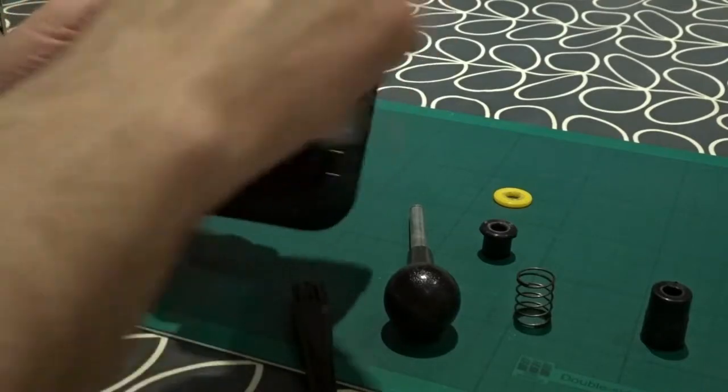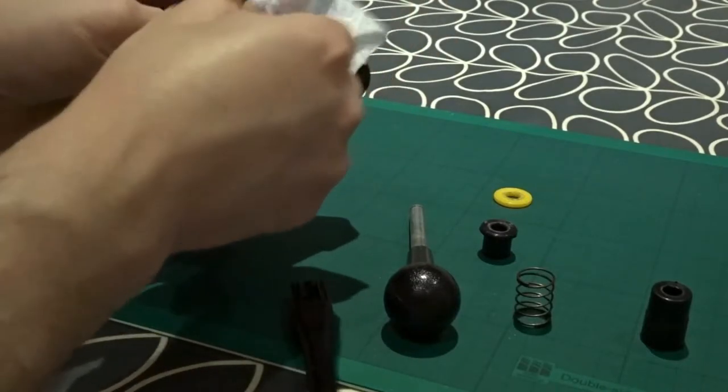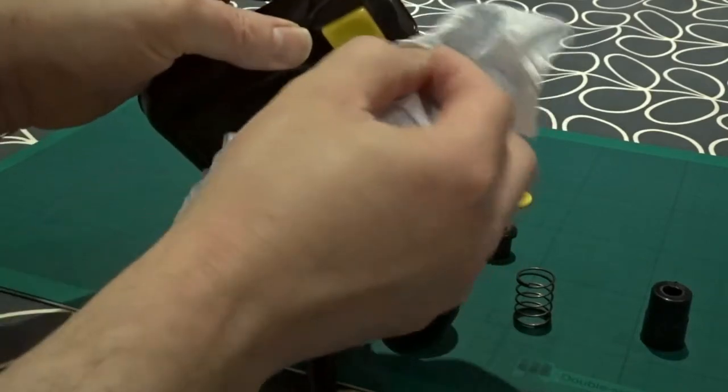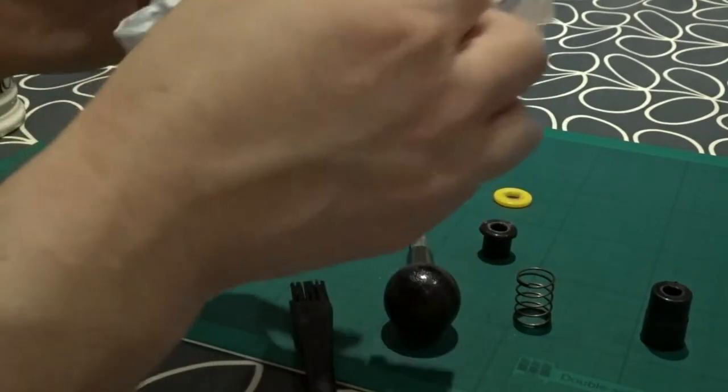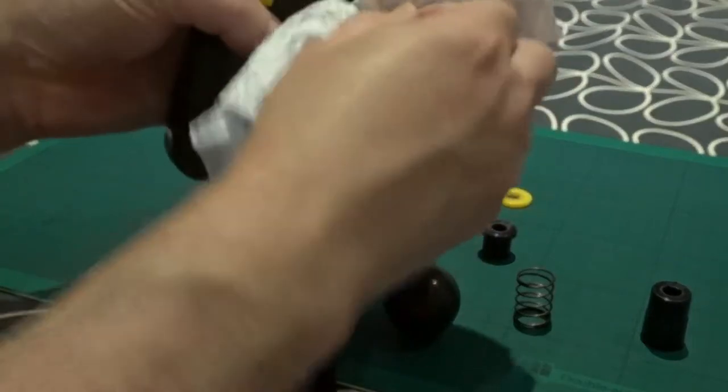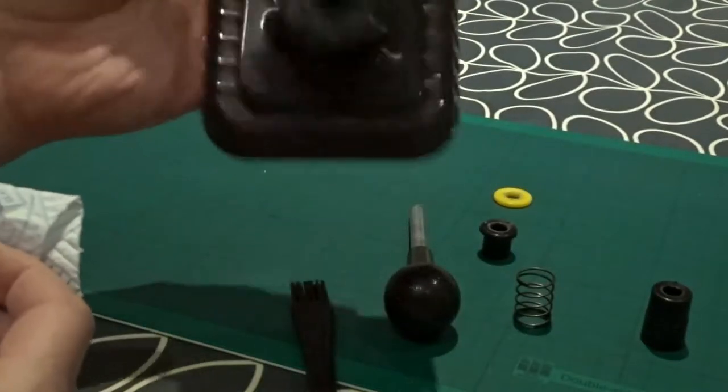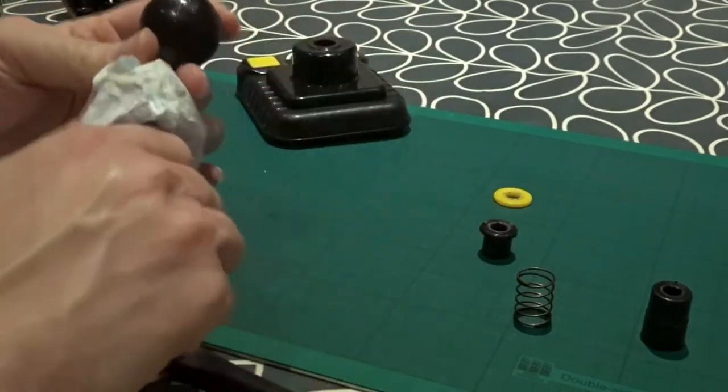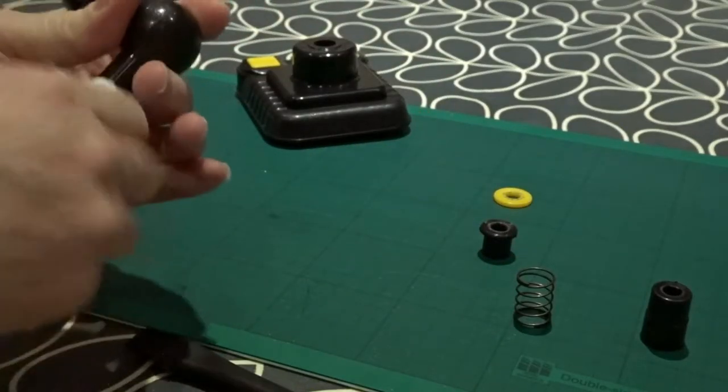There we go that's nicely done. Nice and clean. Just those buttons there. A little bit of grub on them there. Just try and get those out. That's looking good. Lovely. Nice and clean. Again put that to one side and I can now turn my attention to the actual shaft of the joystick.